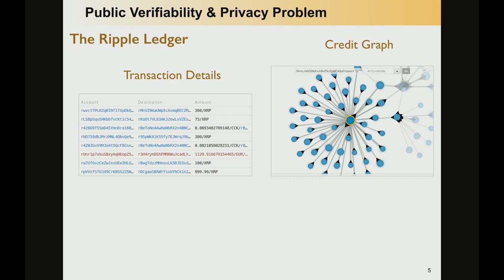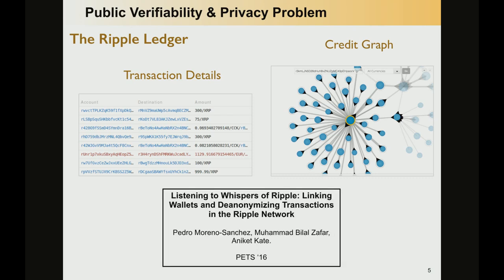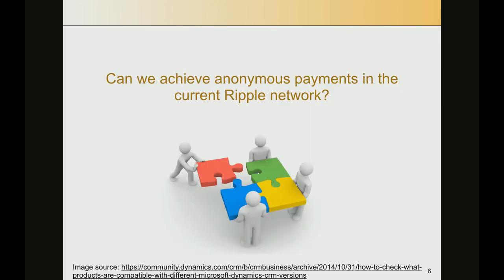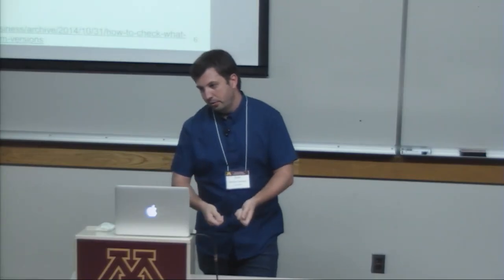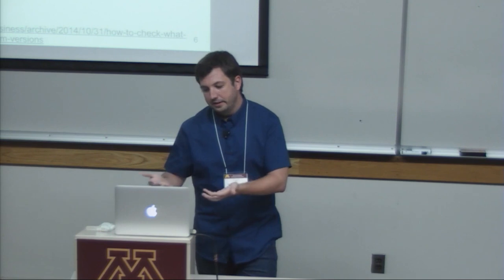As you can imagine, this raises a privacy concern that was justified by our work last year, in which we showed that it is possible to de-anonymize an important percentage of transactions in the Ripple network — that is, to figure out who is paying to whom. So in our work this year, we are trying to solve this problem and answer the question: can we achieve anonymous payments in a Ripple network with the current features, without requiring any extra functionality?